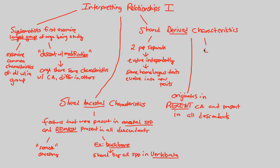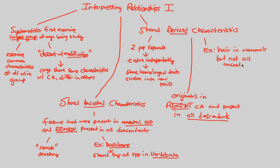A good example is hair in mammals. All mammals have hair. The recent common ancestor is the first mammal, and all descendants of that recent mammal ancestor have hair — that's the shared-derived characteristic. But not all ancestors had hair. The first mammal developed hair and therefore all descendants developed hair.